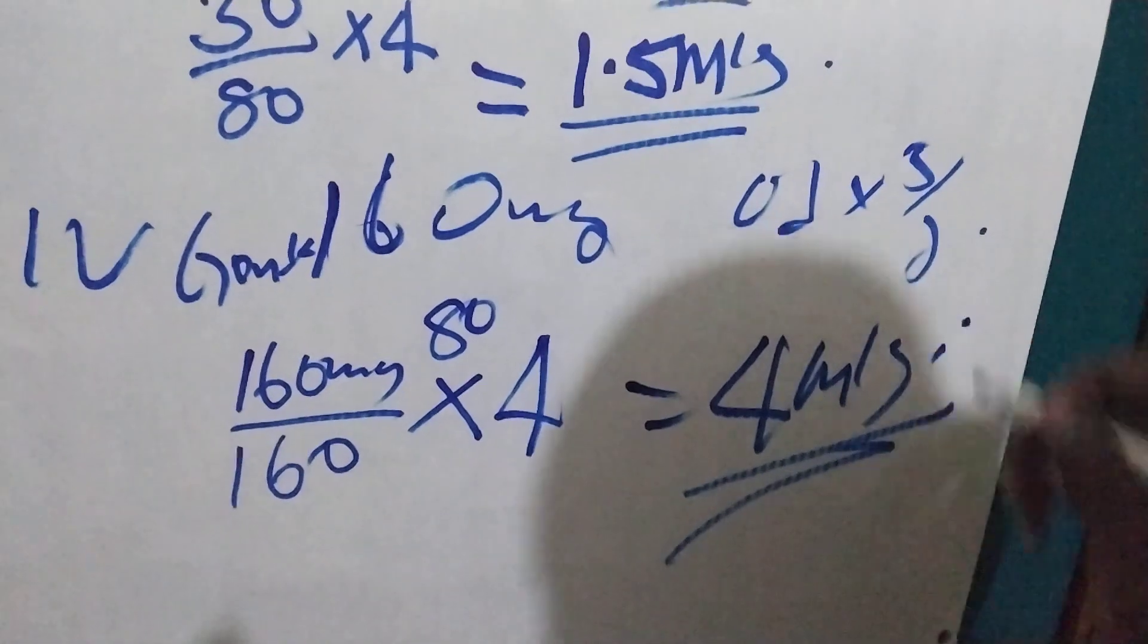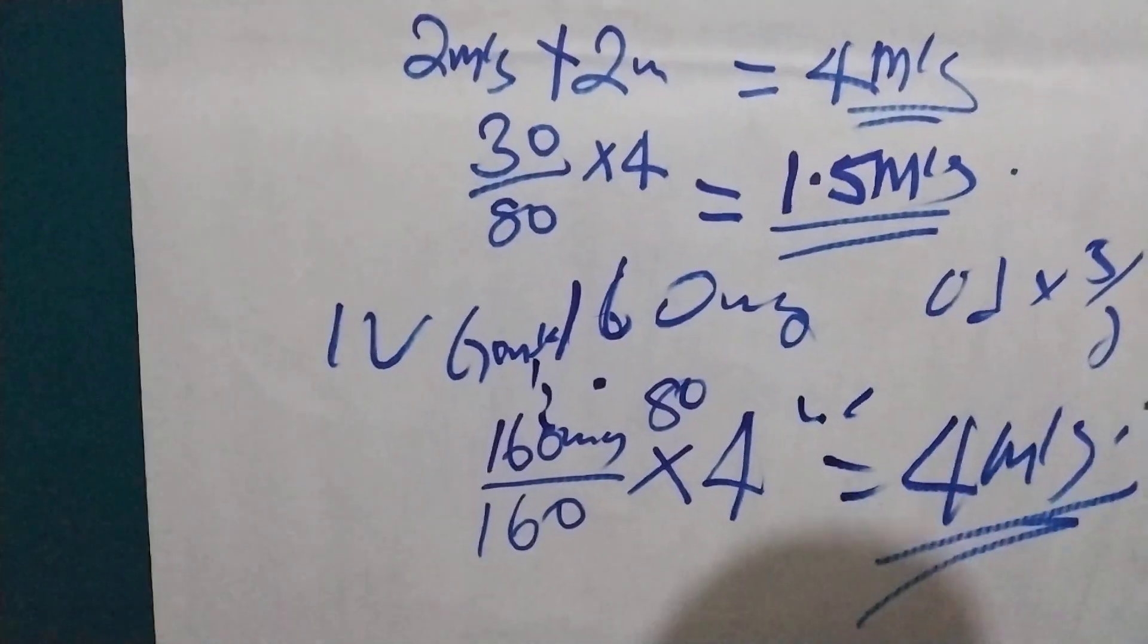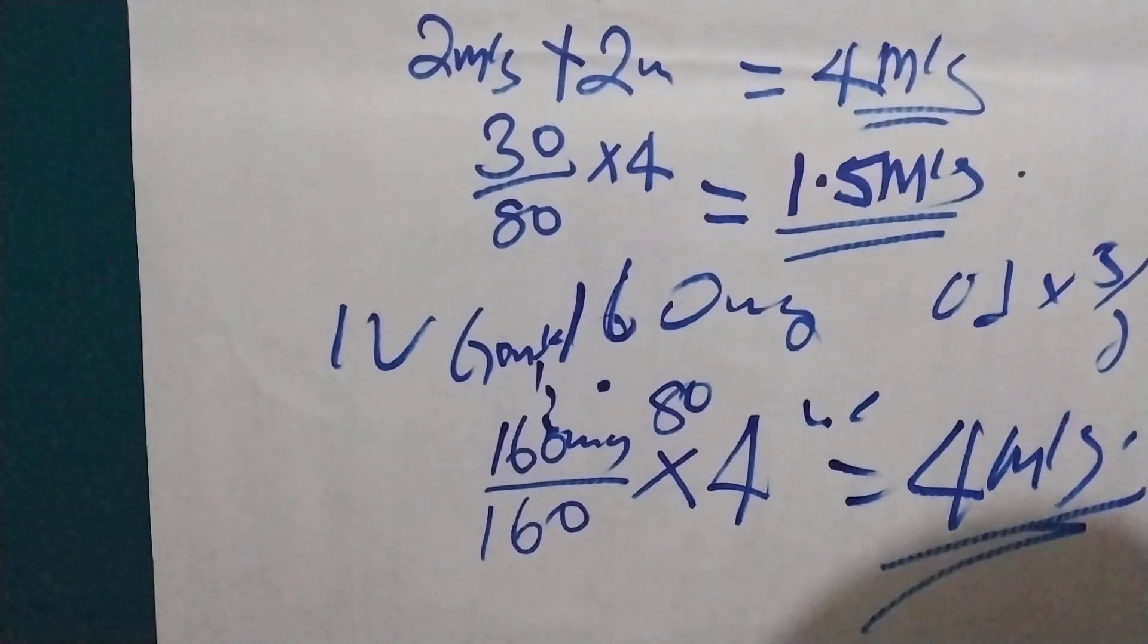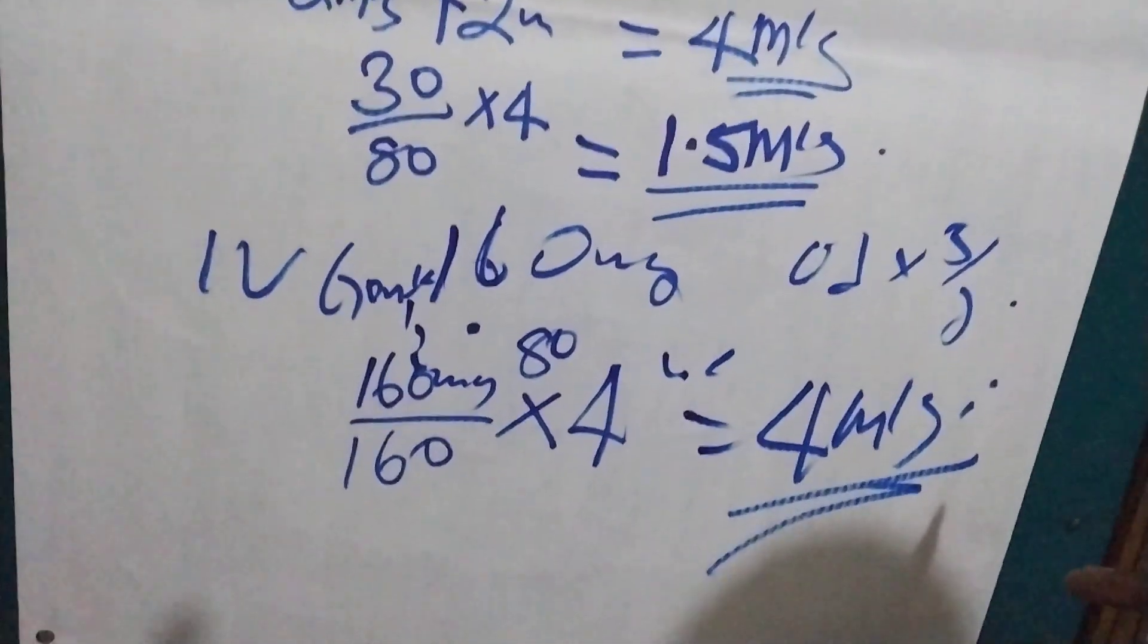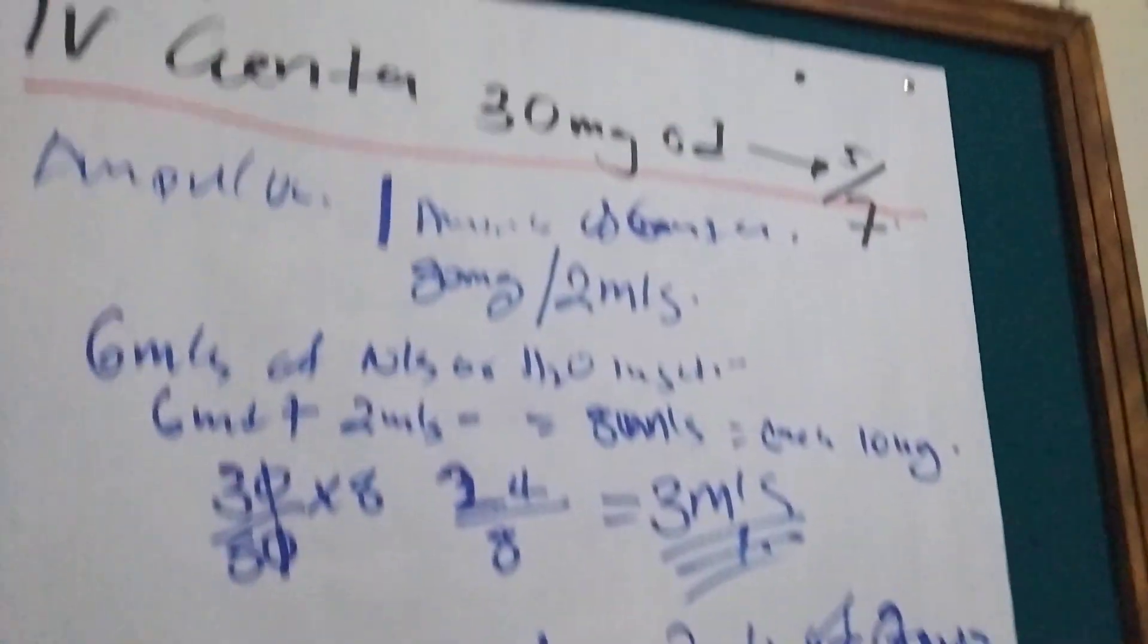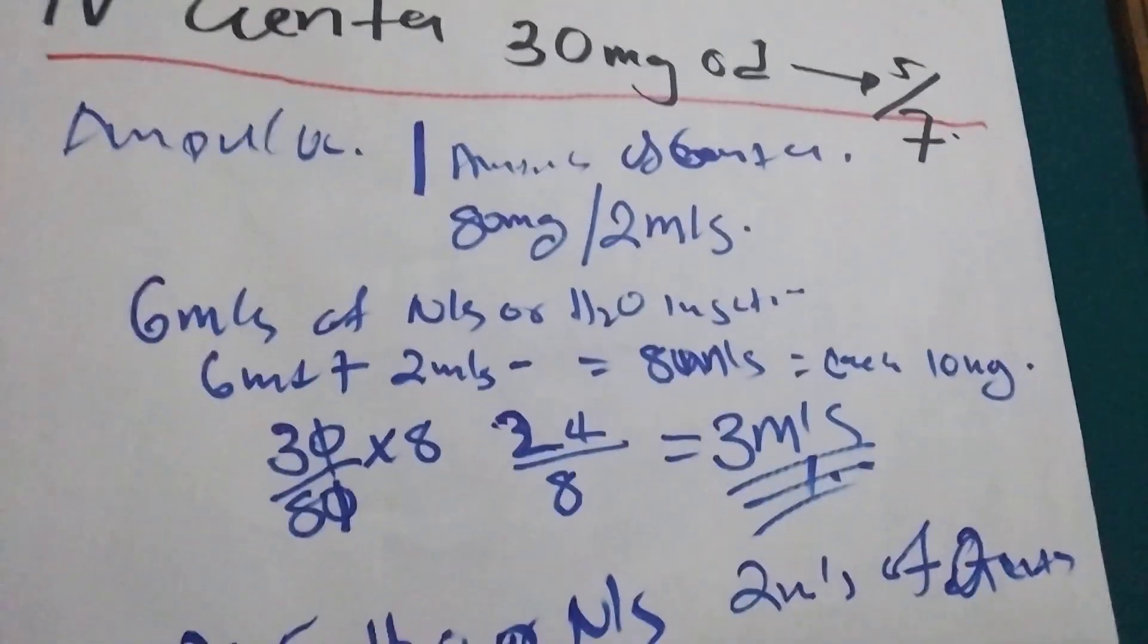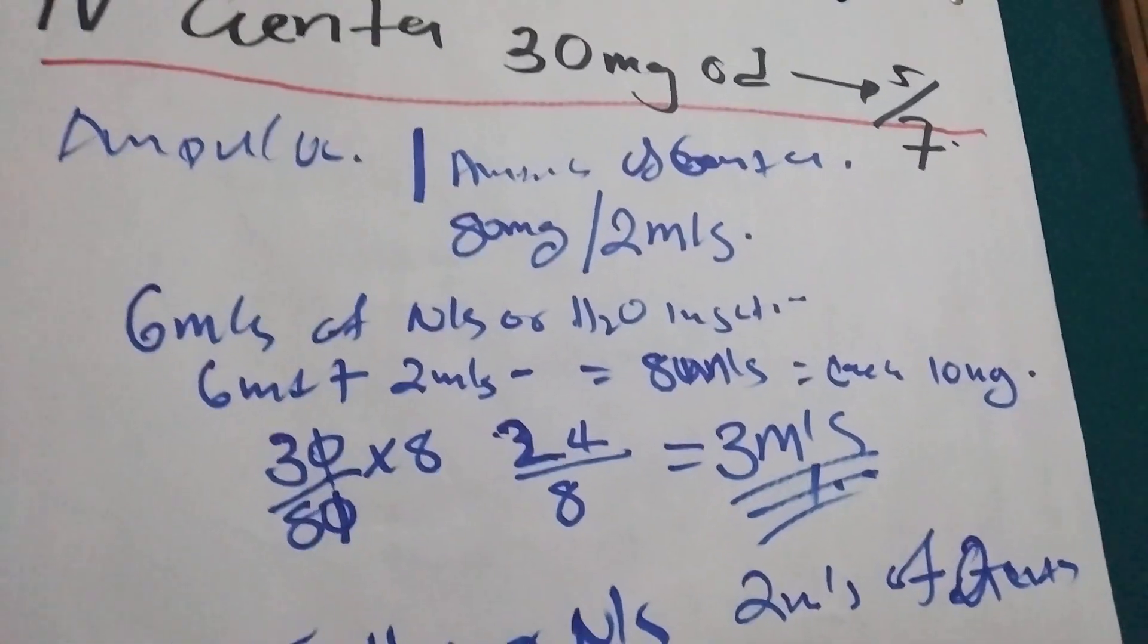If the prescription is 120 or 80, the format is the same. There's no need to change, you just use the same formula and you'll get the answer. So that is how we give gentamicin in neonate, children and adults. Thank you for watching and see you in the next one.